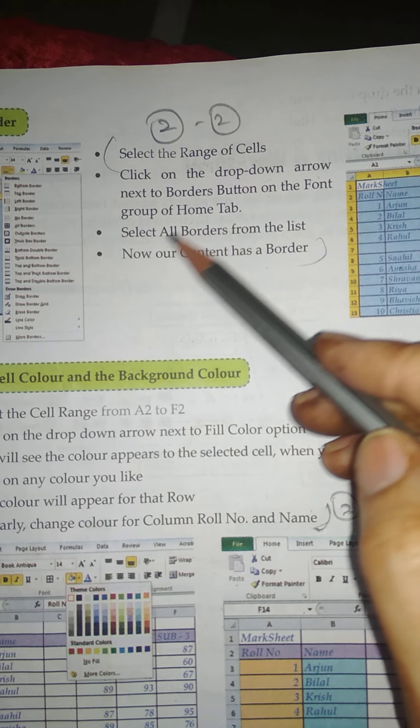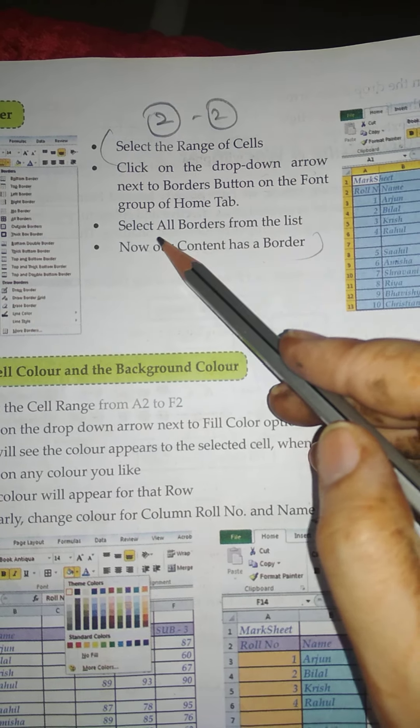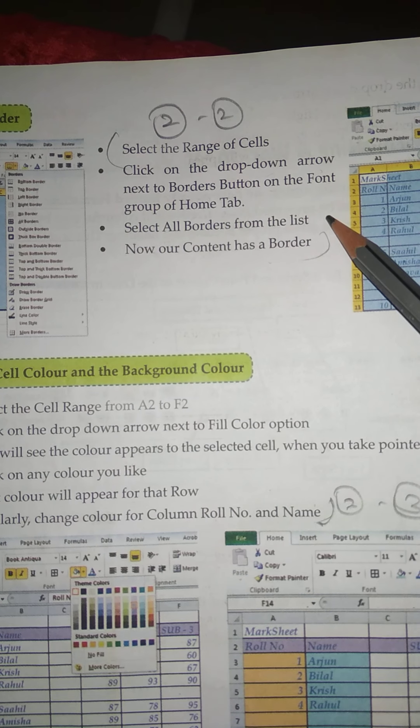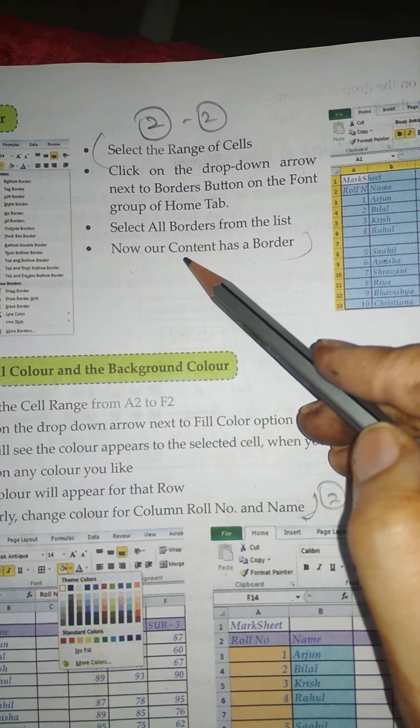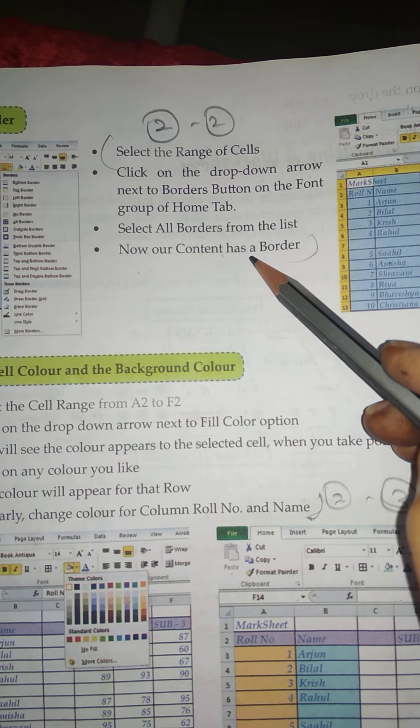Point number three: Select All Borders from the list. Point number four: Now our content has a border.